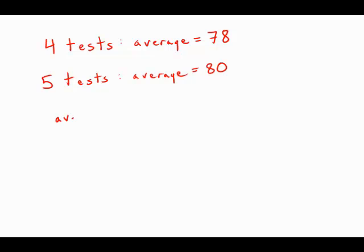You probably know the average formula: the average equals the sum of the grades over the number of grades. So for example, the average 78 would be whatever that sum was divided by four.